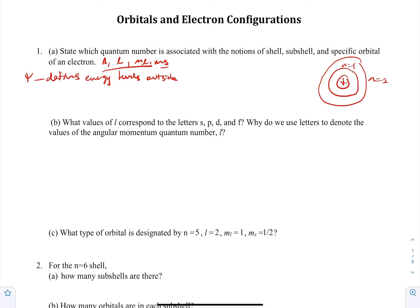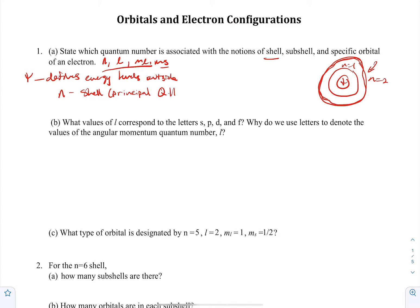Think of these as areas outside the nucleus: as you progressively get further and further away, the higher energy the shells will get. Within these shells there are subshells and corresponding orbitals. For the shell, you just need to know that's going to be N — the principal quantum number.